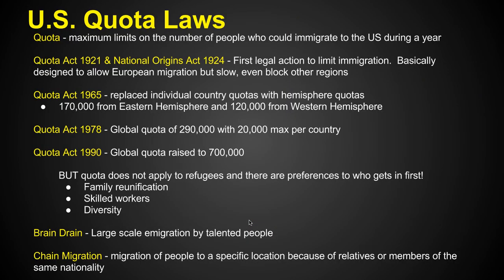Another obstacle for immigrants is quota laws — something that sets maximum limits on the number of people who could immigrate to the US during a year. Back in the earliest 1900s, there were no quota laws; anybody who wanted to move to the United States could just come on in. In 1921 they initiated the quota act, and the national origins act in 1924 limited people. It became an intervening obstacle — the first legal action to limit people coming into the country.